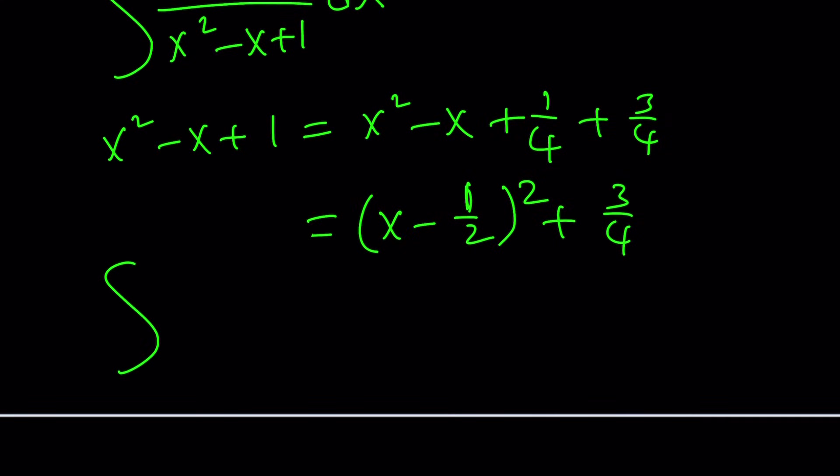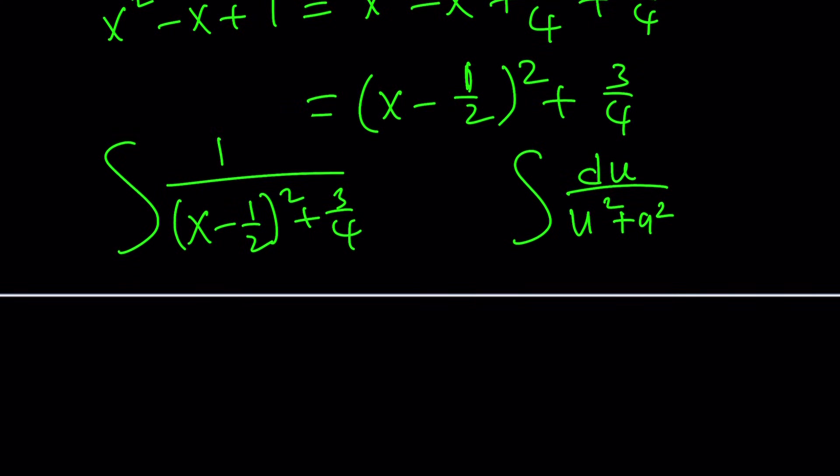Let's go ahead and plug it in and then I'll show you what we're going to do. This will be x minus one half squared plus three fourths. So it's kind of like this. One over u squared plus a squared. You know what that is? And of course that's du, right? With respect to u, a is a constant. A squared is a perfect square. So this is one over a, if I'm not mistaken, times arctangent u over a plus a constant c.